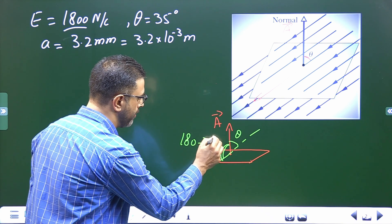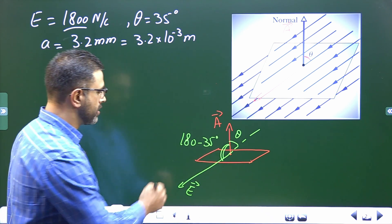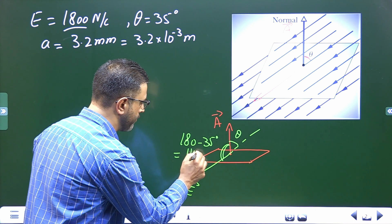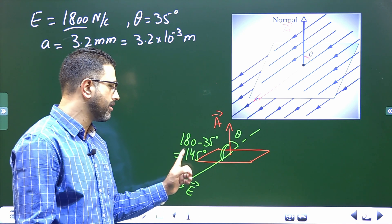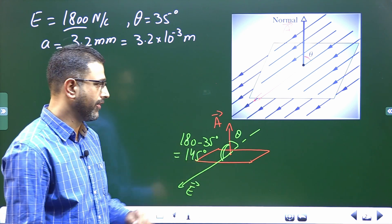So 180 minus 35 degrees, which is 145 degrees. So angle between the direction of area and direction of field is 145 degrees.